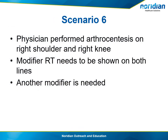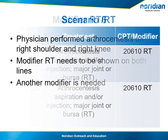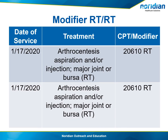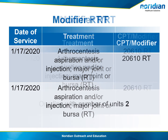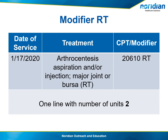In scenario 6, the physician performed an arthrocentesis on the right shoulder and the right knee. Modifier RT needs to be appended to both lines, but another modifier is needed. Unlike scenario 5 where RT and LT can be used for different sides, in this case both injections are on the same side of the body. If billed the way it's shown, line 2 will deny as a duplicate. The better way is to show both on one line with the number of units as 2. Make sure the documentation shows the location of each injection.